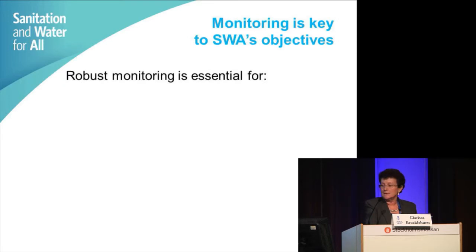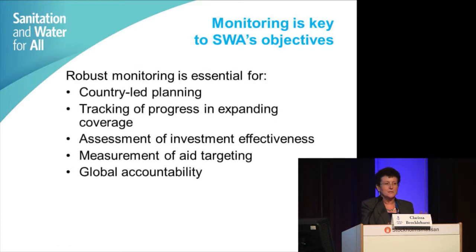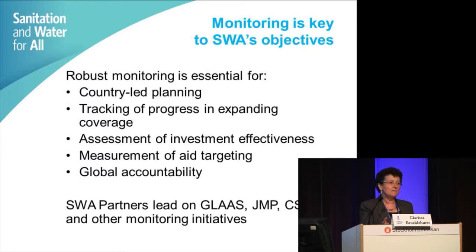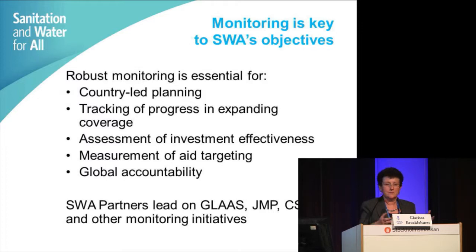My last two slides are about how SWA fits into all of this. Monitoring is key to the objectives that Sanitation and Water for All as a partnership has set for itself. Robust monitoring is essential for country-led planning, tracking of progress, assessment of investment effectiveness, measurement of aid targeting, and particularly global accountability. Already, many of the 88 partners in Sanitation and Water for All are the partners that lead on the big monitoring initiatives — GLASS, JMP, CSOs, etc.